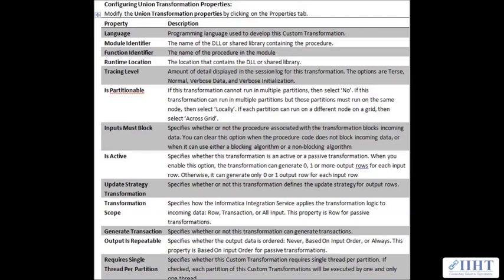The Output Is Repeatable property specifies whether the output data is ordered — Never, Based on Input Order, or Always. This property is based on input order for passive transformations. The Requires Single Thread Per Partition property specifies whether the custom transformation requires a single thread per partition; if checked, each partition of the custom transformation will be executed by one and only one thread. The Output Is Deterministic property specifies whether the same set of output data is generated during each session run.